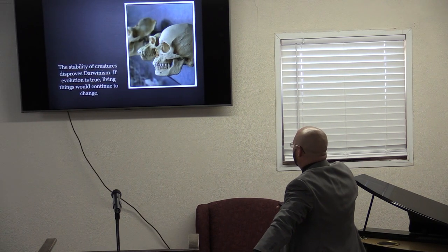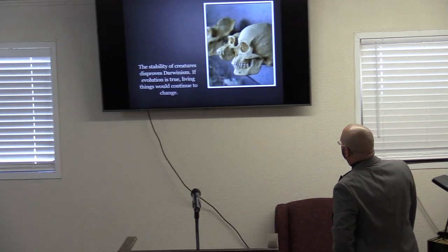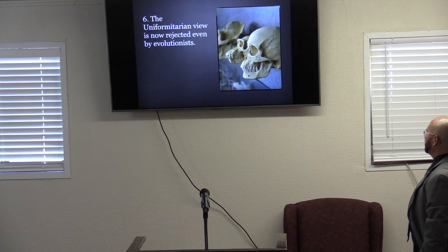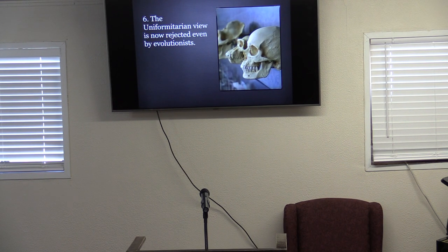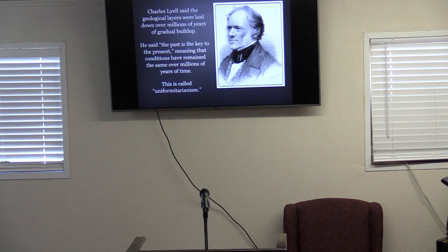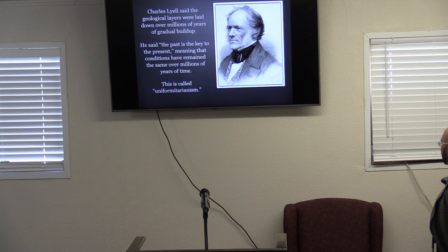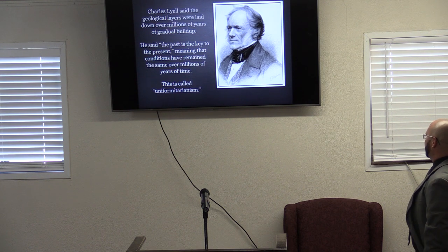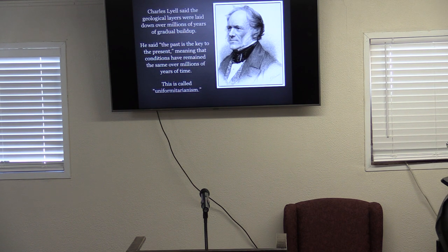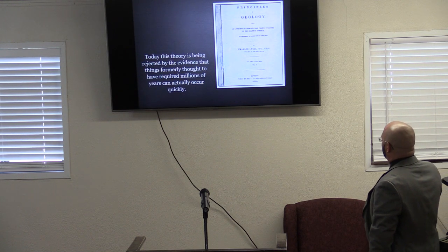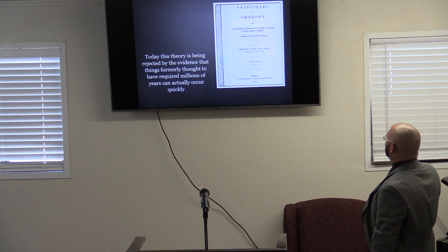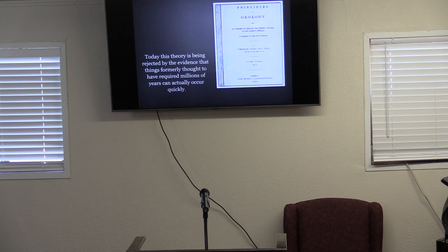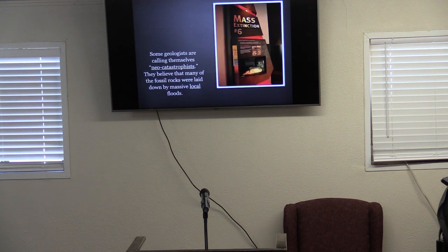Number six: the uniformitarian view is now rejected even by evolutionists. Charles Lyell said geological layers were laid down over millions of years of gradual buildup — 'the past is the key to the present,' meaning conditions have remained the same. This is called uniformitarianism. Today this theory is being rejected by evidence that things formerly thought to require millions of years can actually occur very quickly. Some geologists are calling themselves neo-catastrophists.